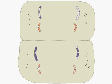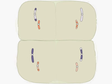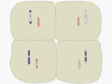Overall, the two divisions of meiosis produce four cells, each containing the haploid number of chromosomes.